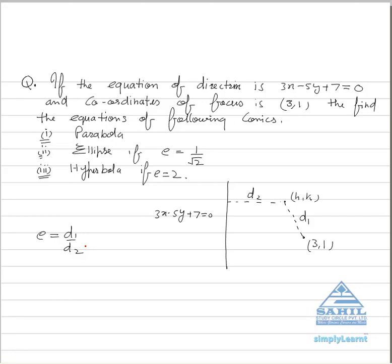Now what is the distance d1? When you just see, this d1 equals root of (h minus 3) whole square plus (k minus 1) whole square. Got this? What about d2?